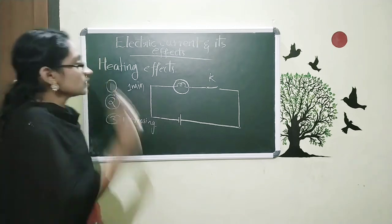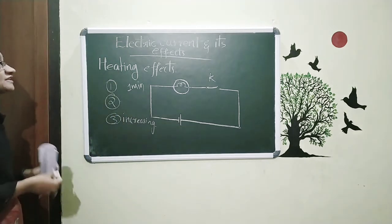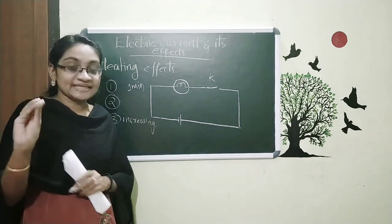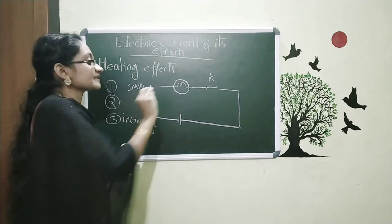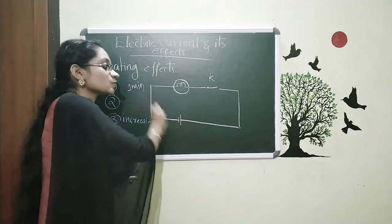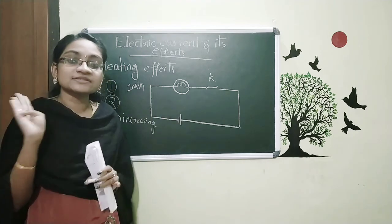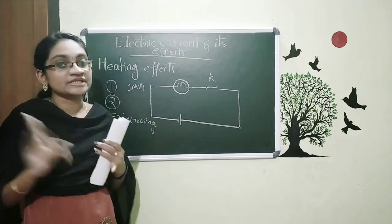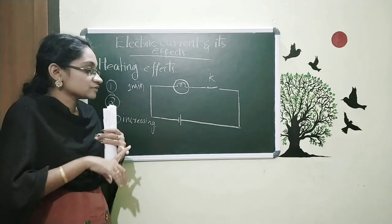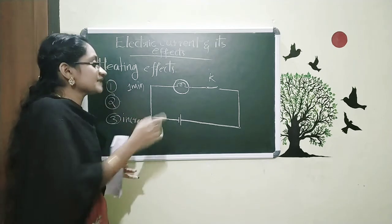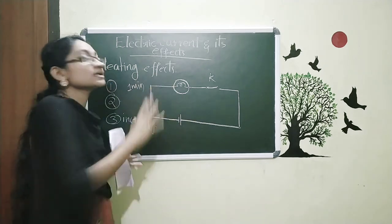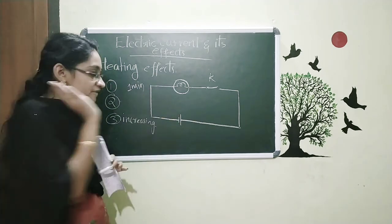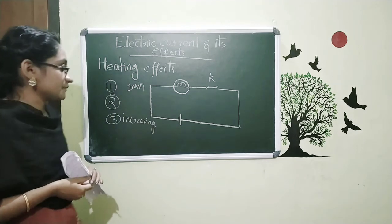You will feel that the heat is getting decreased. So this is a simple experiment where we identify that heat is produced when electricity is flowing through this circuit. If there is no electricity flowing through the circuit, there is no heat produced. The second thing is that when electricity is flowing, a certain amount of heat is produced.